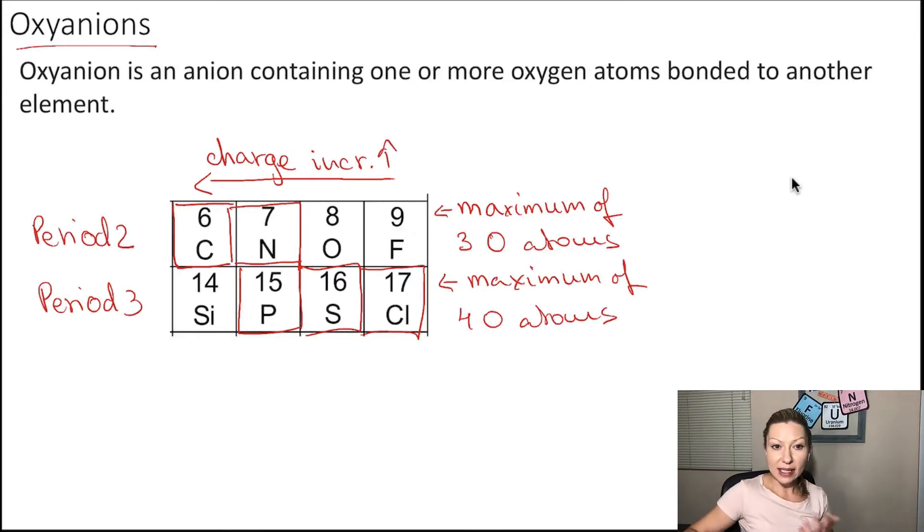This means that if I have an oxyanion with nitrogen atoms, it can have a maximum of three oxygen atoms. So that means that I cannot have more than NO3, and the charge increases as I go left to right. Since nitrogen is the first in this period, I'm going to have a minus one charge. The name of this oxyanion is going to be the nitrate ion.